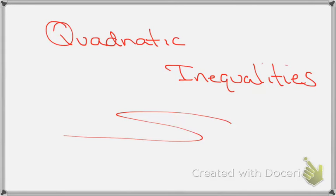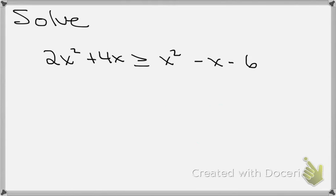In this video we want to look at how we can solve quadratic inequalities. We're going to use something from one of my other videos, which is how to use a sign line or sign chart to do this. Consider a problem in which you have to solve the inequality 2x squared plus 4x is greater than x squared minus x minus 6. This is quadratic because the highest power on any variable is 2, and it's an inequality.